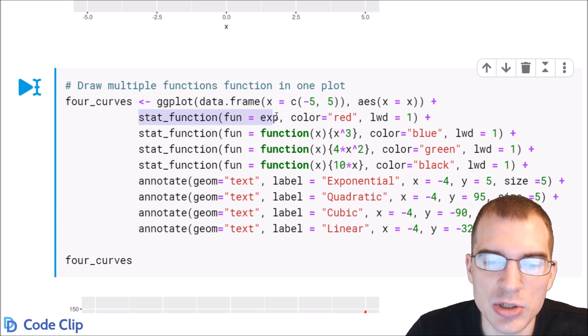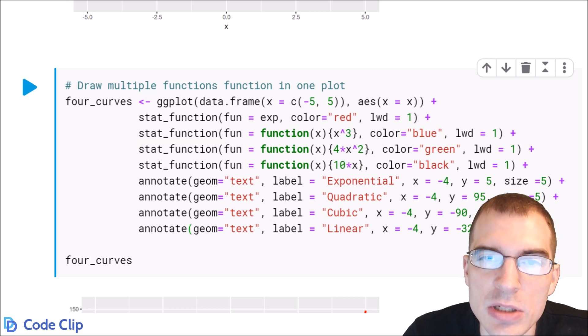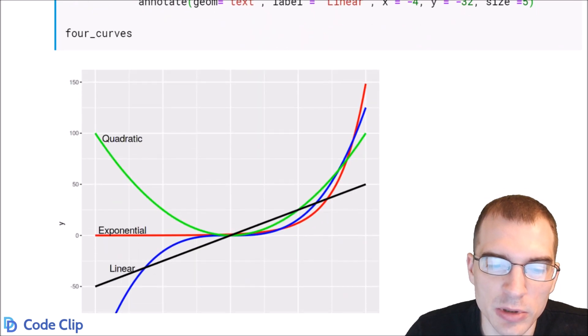We're going to add an exponential function, a cubic function, a quadratic function, and a linear function. And you can see you can actually just define the functions you're plotting right here inside the stat function call. And when we run this we will create a plot with four different functions that are labeled so we can compare them a little bit.